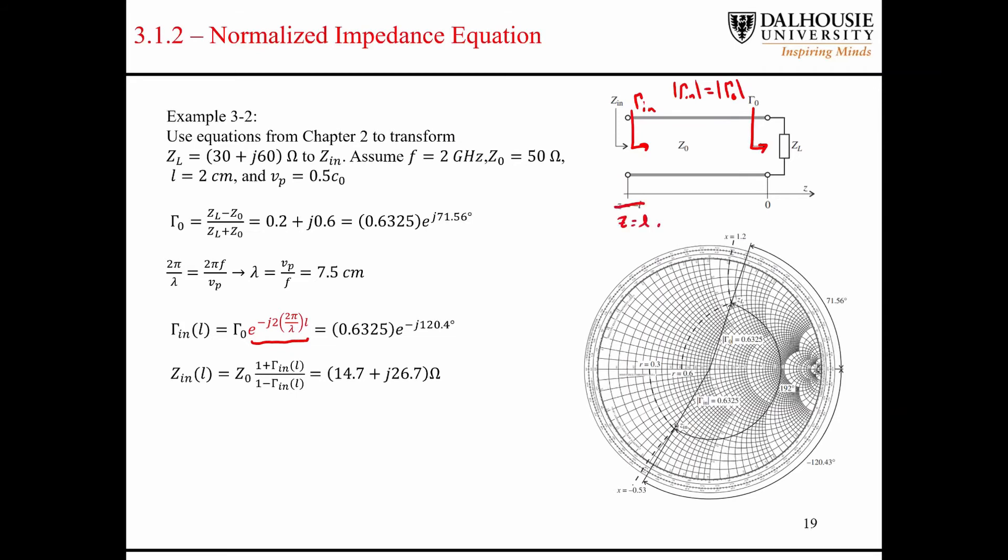So what changes is the angle of the reflection coefficient at z equals L. So that's seen by considering what happens when you multiply a complex number by a complex exponential like this.